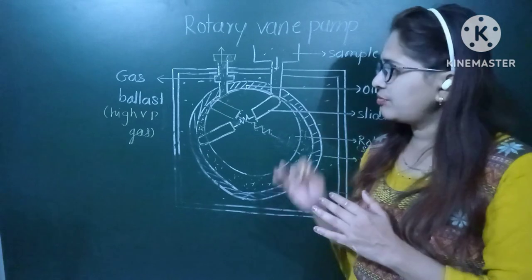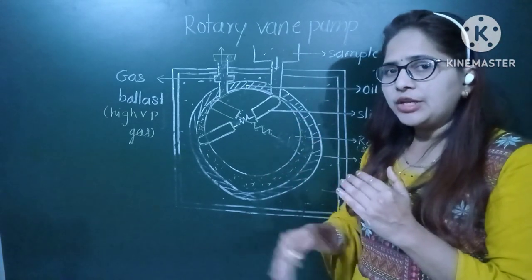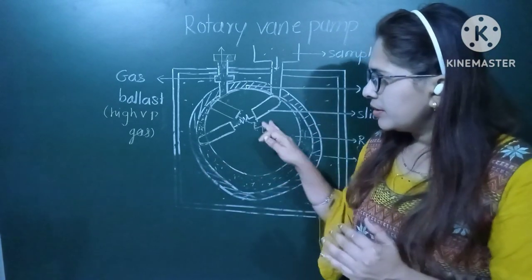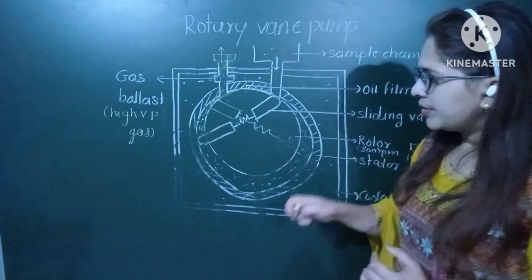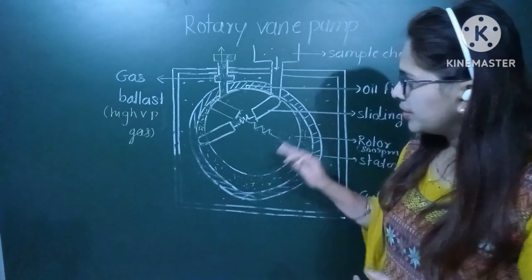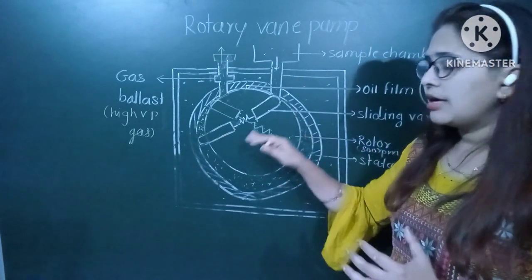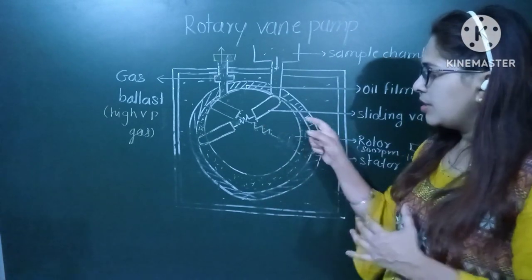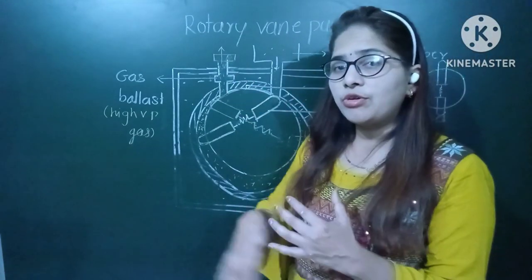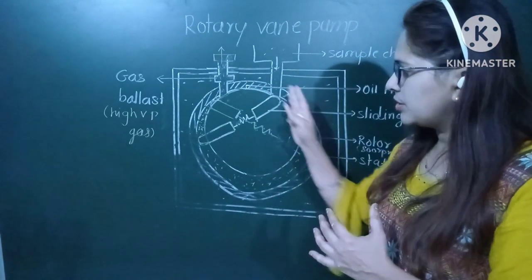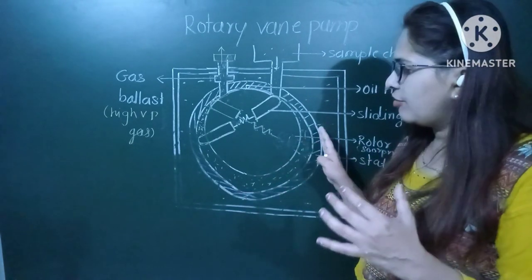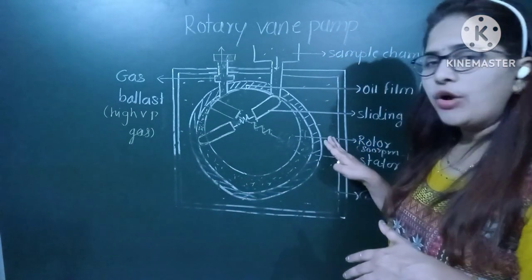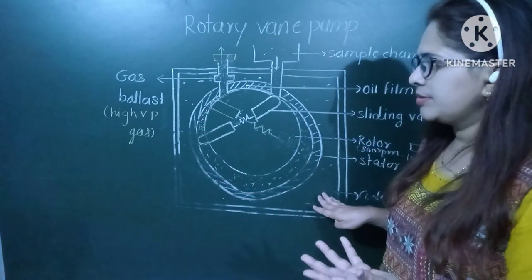With the help of this rotary pump, we can remove the air molecules continuously from the sample chamber. As the rotor is moving at very high speed — nearly 800 to 1400 RPMs — a large amount of heat is generated. There is a possibility of heating of the stator. Therefore, the whole arrangement is kept in oil or a coolant.